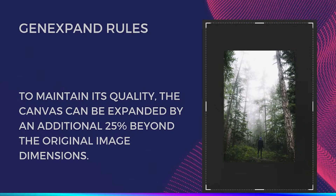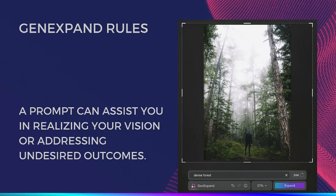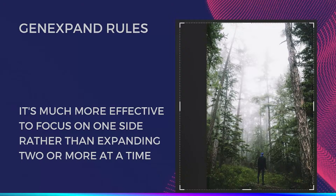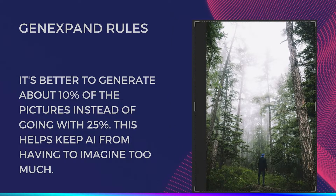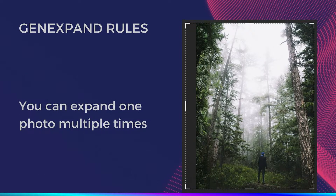To maintain quality, the canvas can be extended by about 25% beyond the original image. A prompt can assist you in realizing your vision or addressing undesirable results. It's more effective to focus on one side at a time rather than expanding two or more sides at once. It's better to generate about 10% of the picture at a time instead of the full 25% — this keeps the AI from having to imagine too much.